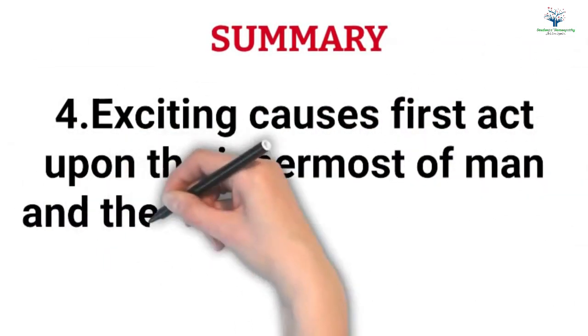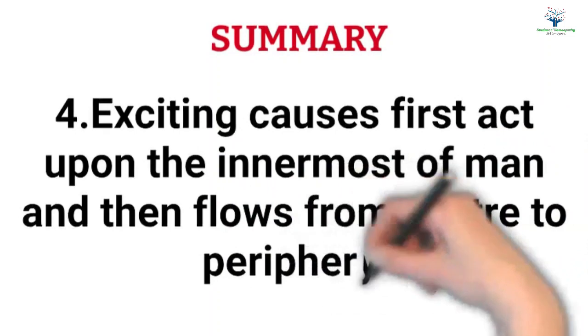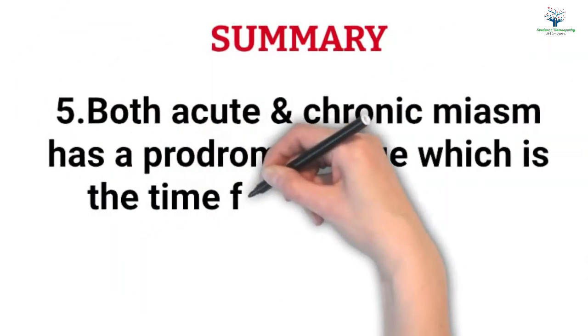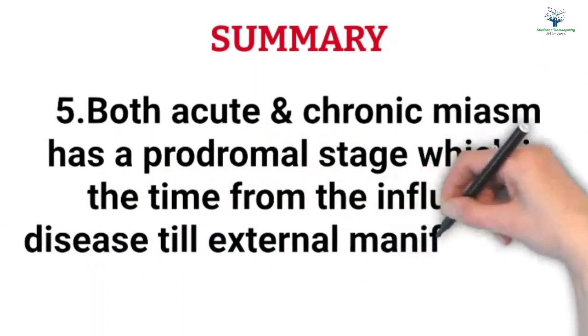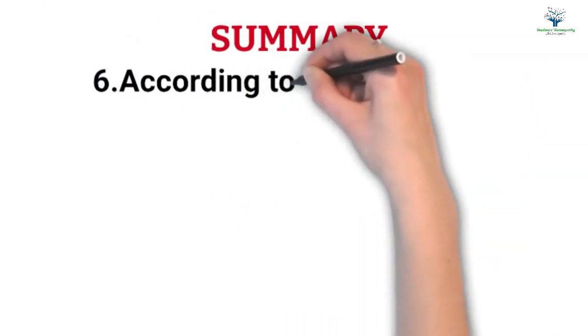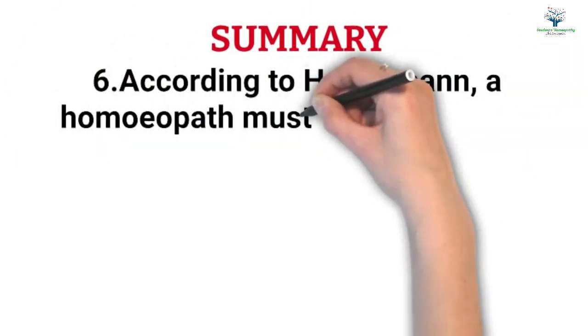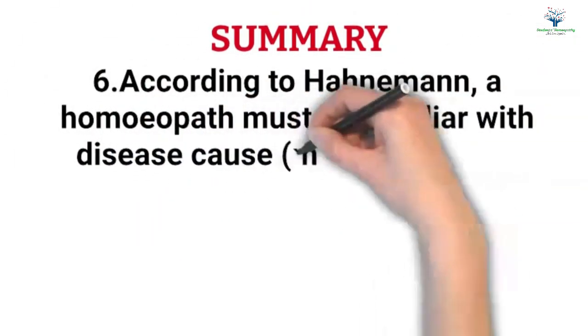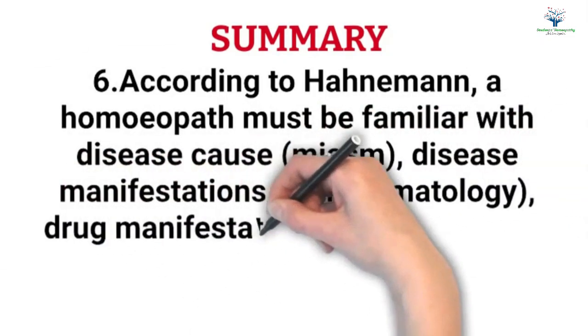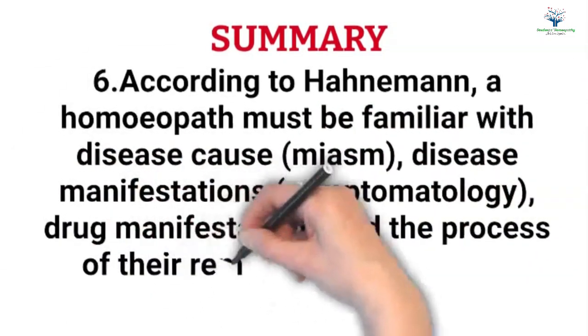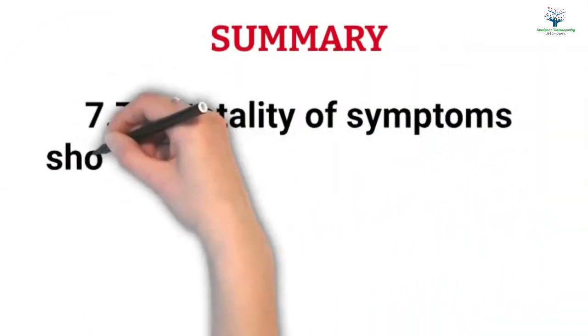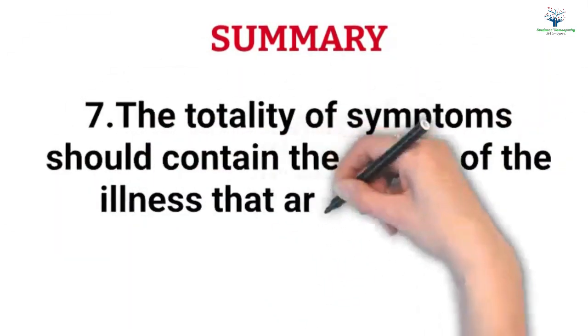Exciting causes first act upon the innermost of man and then flow from center to periphery. Both acute and chronic miasms have a prodromal stage which is the time from the influx of disease to the external manifestation of the signs and symptoms. According to Dr. Hahnemann, a homeopath must be familiar with disease cause, that is miasm, disease manifestation, that is symptomatology, drug manifestations, and the process of the removal following fixed principles.